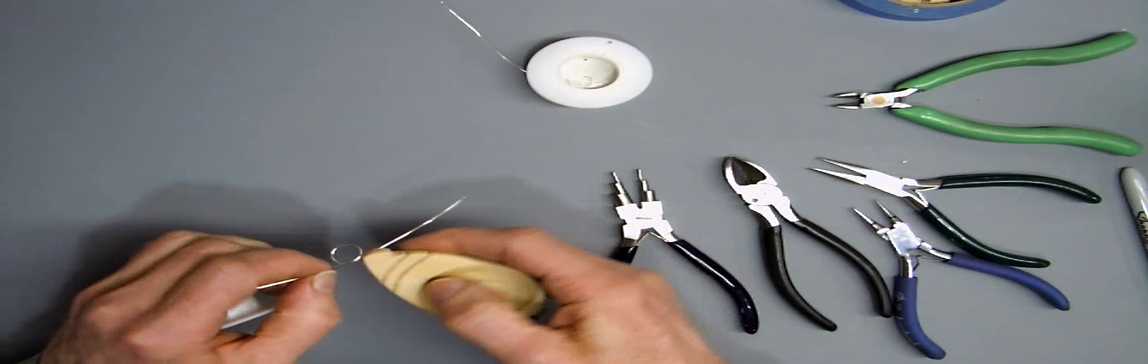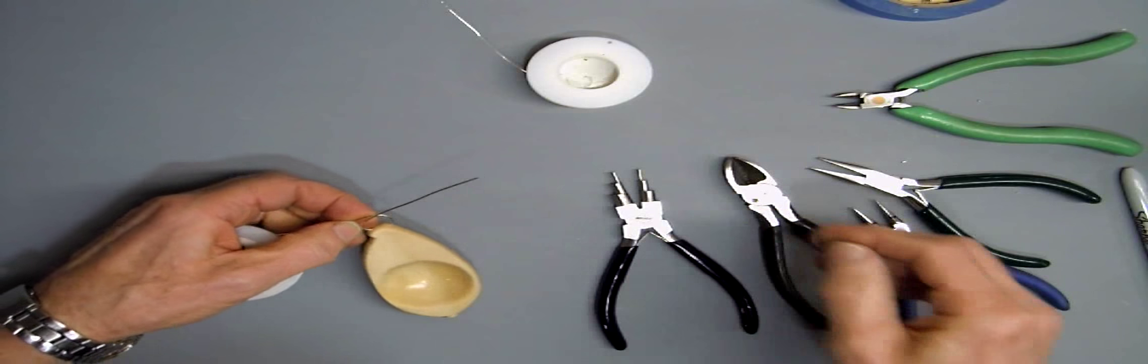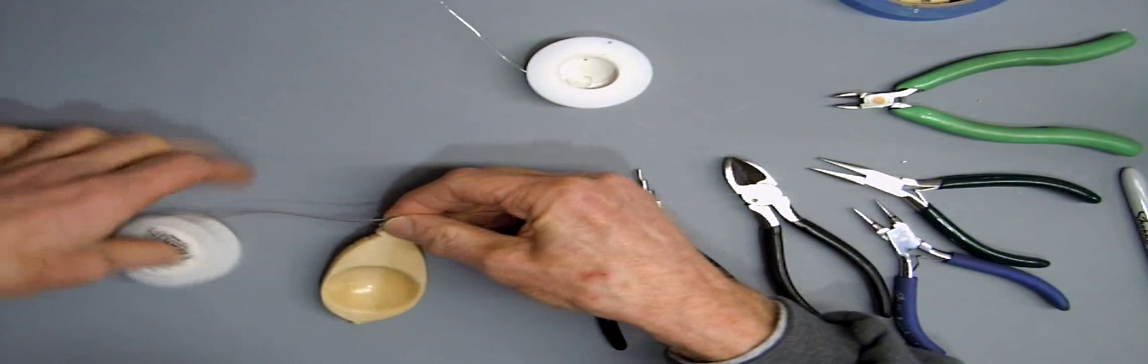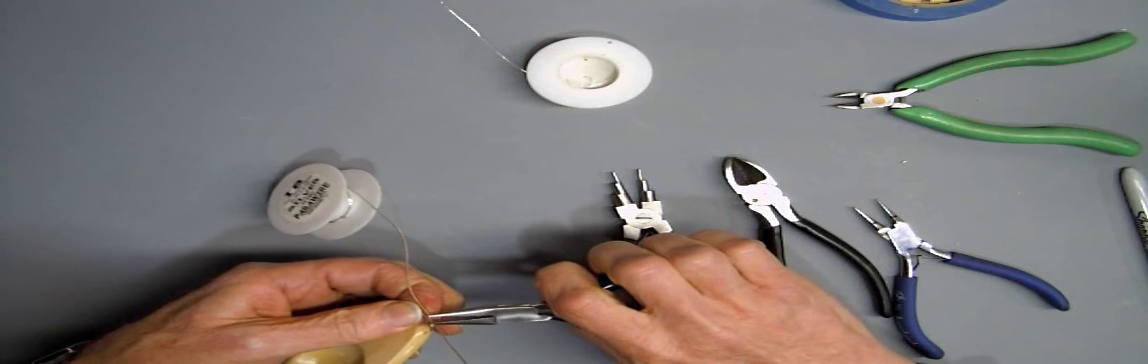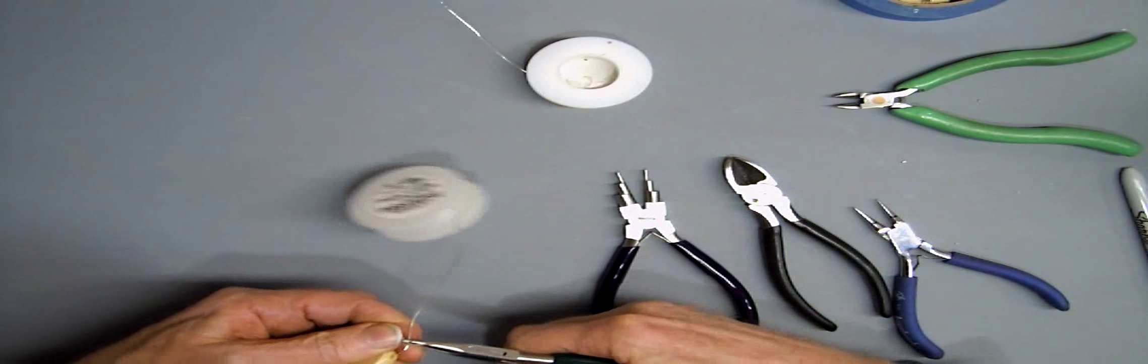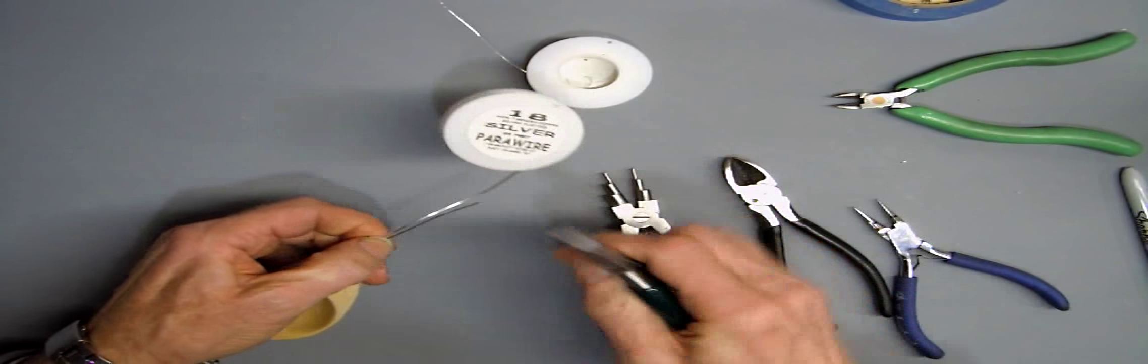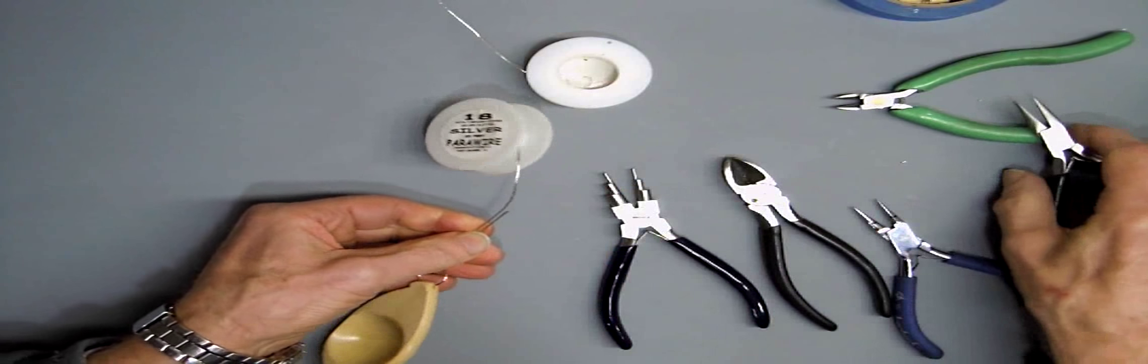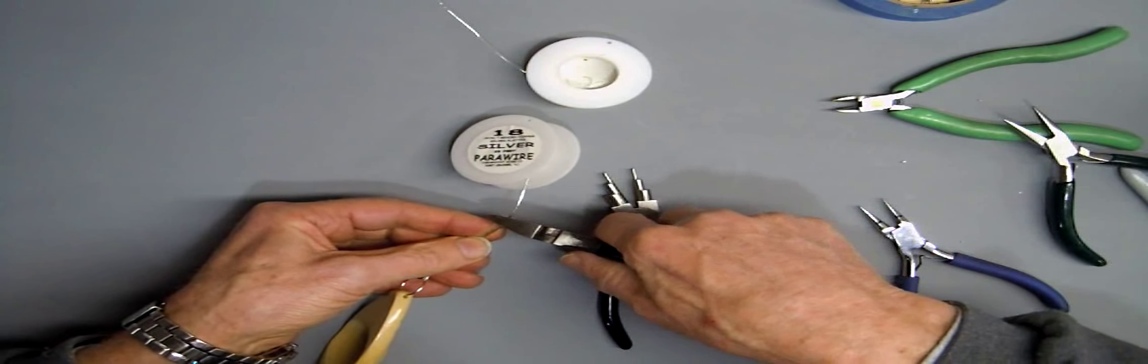We'll thread the wire through the pendant and bend the prongs up. So now what we have is sort of a G with wires at both beginning and end. Cut both wires to the same length.